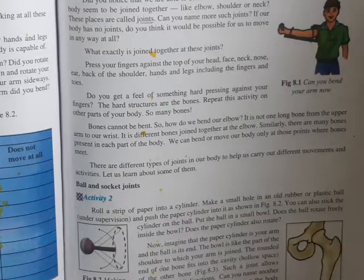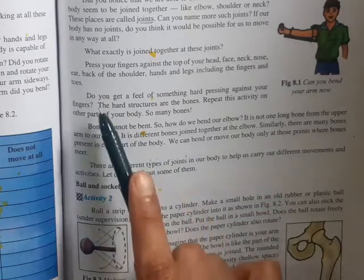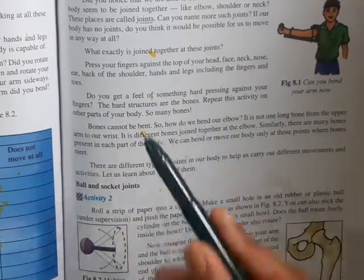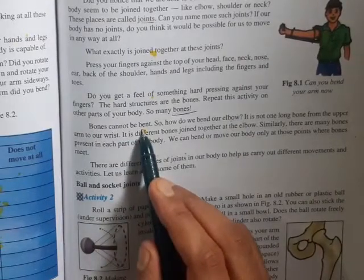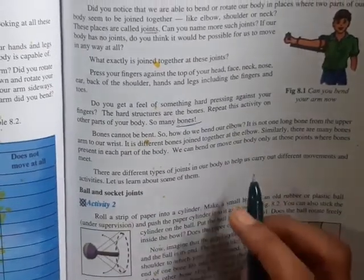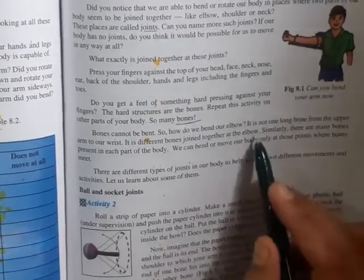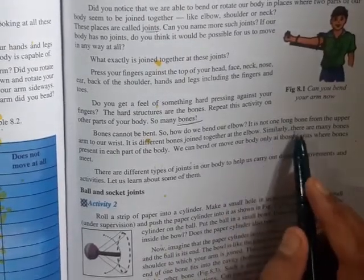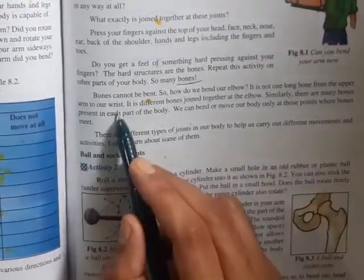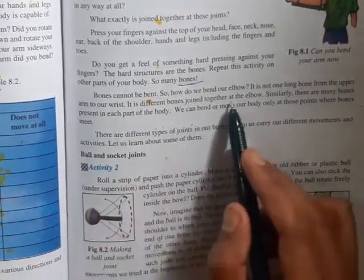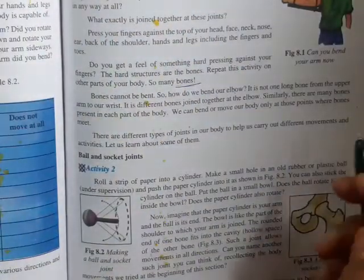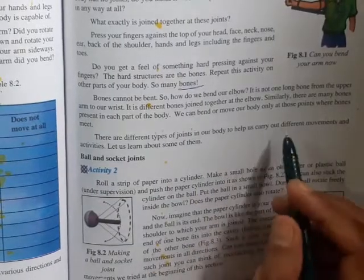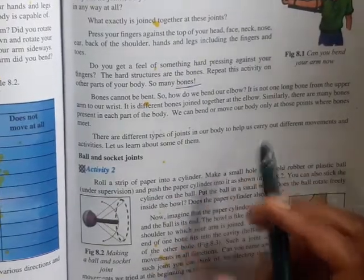Do you get a feel of something hard? Bones cannot be bent. So how do we bend our elbow? It is not one long bone from the upper arm to our wrist. It is different bones joined together at the elbow.